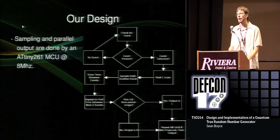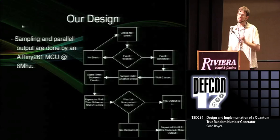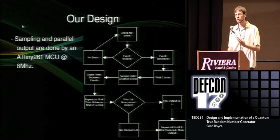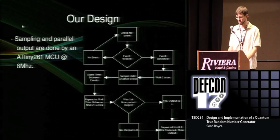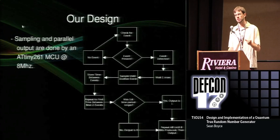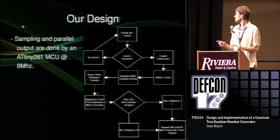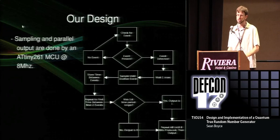The sampling algorithm is where you have to pay more attention. What it does is measure the time between two particle detection events, and then do that again — so you have two inter-event times. You compare them: if the first time is larger, you output a one; if the second time is larger, you output a zero. I didn't come up with this myself — several other people have done this before. It works very well because the time between particle detection events is defined by a Poisson distribution, and two consecutive inter-event times have a very similar Poisson distribution, so you can compare the two to get a nice random distribution.